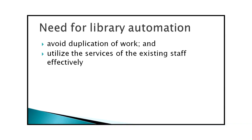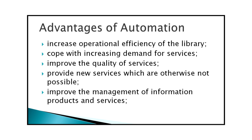There is also the need to overcome geographical and other barriers to communication, optimum utilization of available resources inside or outside, and improving existing services from the point of view of quality, user-friendliness, regularity and consistency. Automation helps in avoiding duplication of work and utilizing the services of existing staff more effectively. It increases operational efficiency, improves quality of services, provides new services, improves management of information products, facilitates wider access to information, and enables easy communication among libraries and professionals.